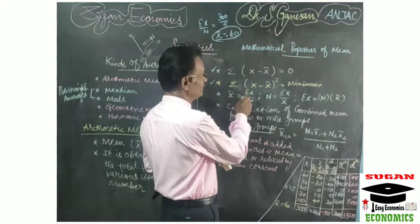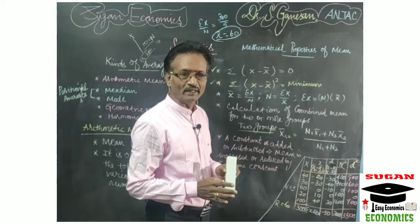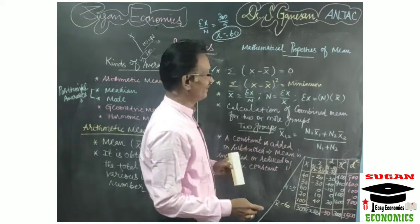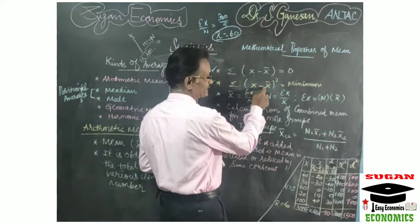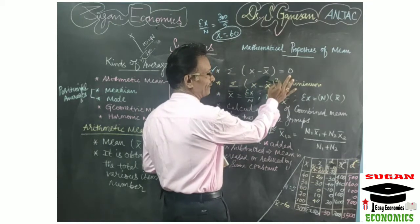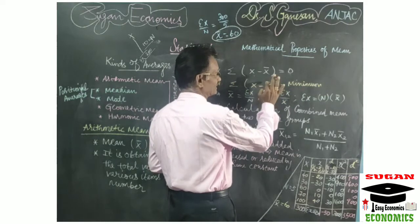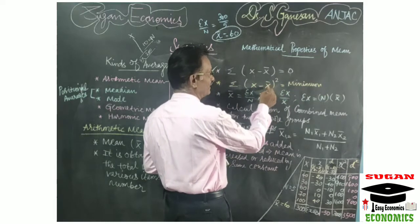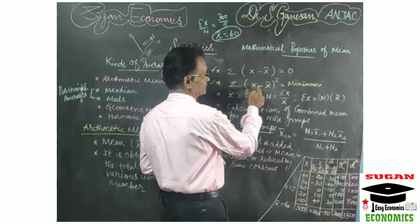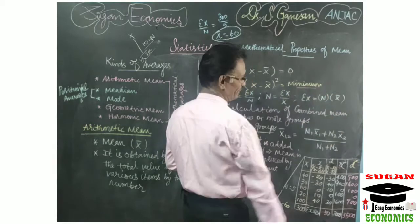Property 2: the sum of the squares of the deviations taken from the arithmetic mean is always minimum. Here you take x minus x-bar as the deviation value, then square it. The total sigma of (x minus x-bar) squared is always a minimum.